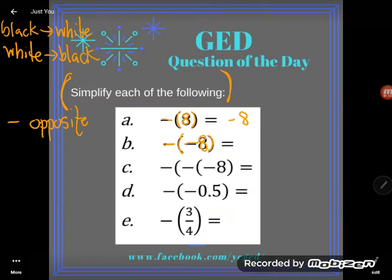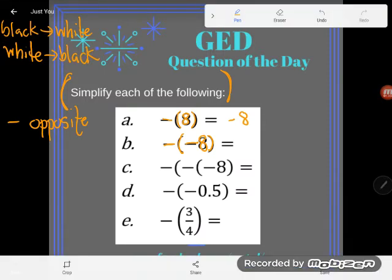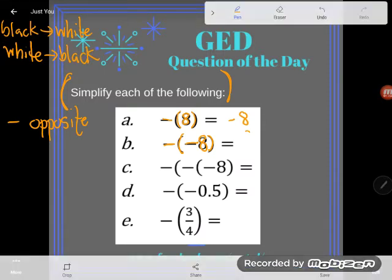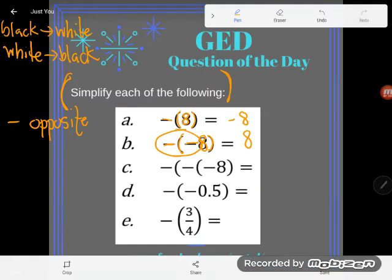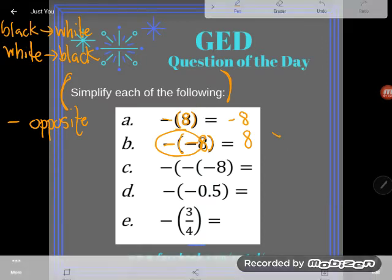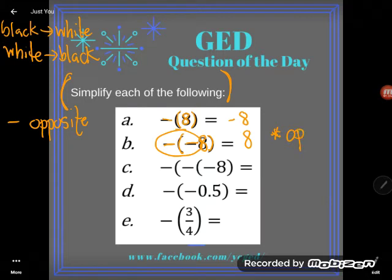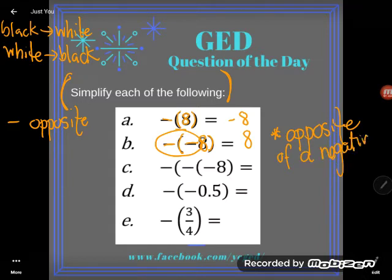So on A we had said that the opposite of positive 8 was negative 8, so then the opposite of negative 8 must be positive 8. And we see that beautiful principle that those two negatives in a row basically cancel each other out - the opposite of a negative is a positive. Make a little note to yourself in your notes because this explains a lot of what we do with negative numbers. The opposite of a negative is a positive.